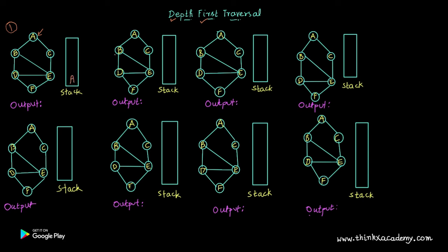We are going to use a stack, which follows the FILO rule — first in, last out. That means the first element inserted is going to be the last element to come out of the stack. In breadth first search we use a queue, and in depth first search we are going to use a stack. If you don't know what a stack is, please go to the tutorial on our channel. Now we have visited A, so we are going to push A into the stack.